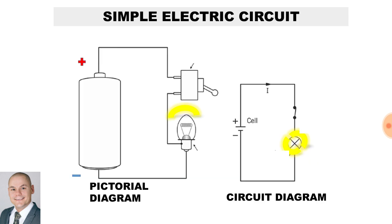Here we have a simple electric circuit represented by a pictorial diagram and a circuit diagram. Now the components in this circuit is a battery, a switch and a lamp.